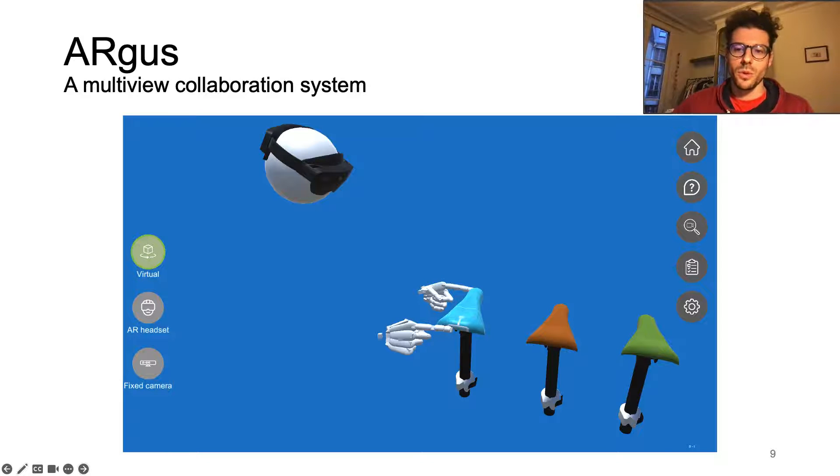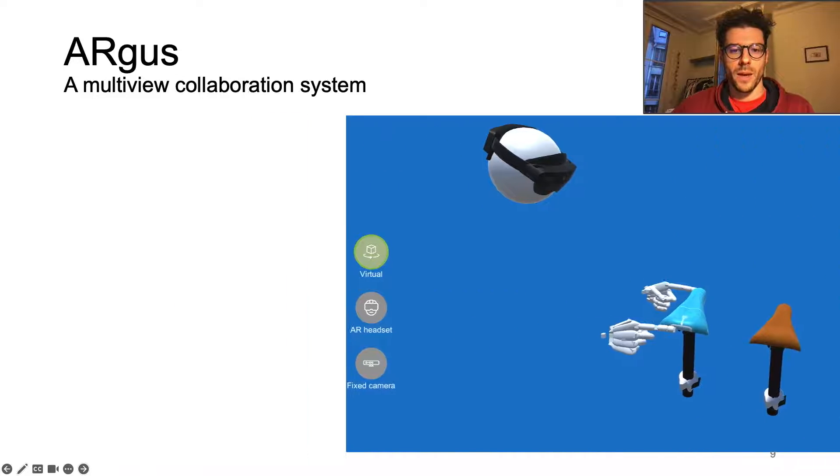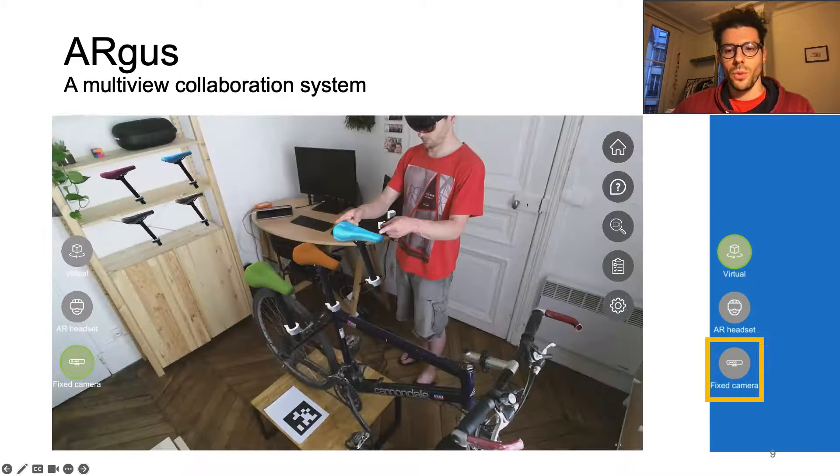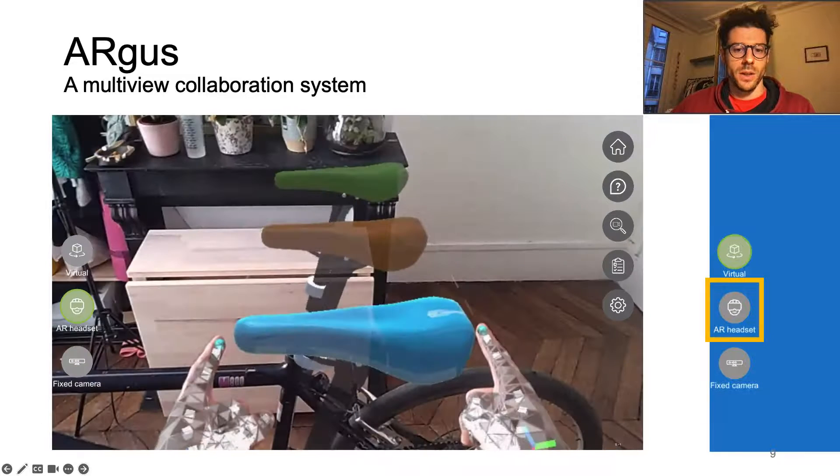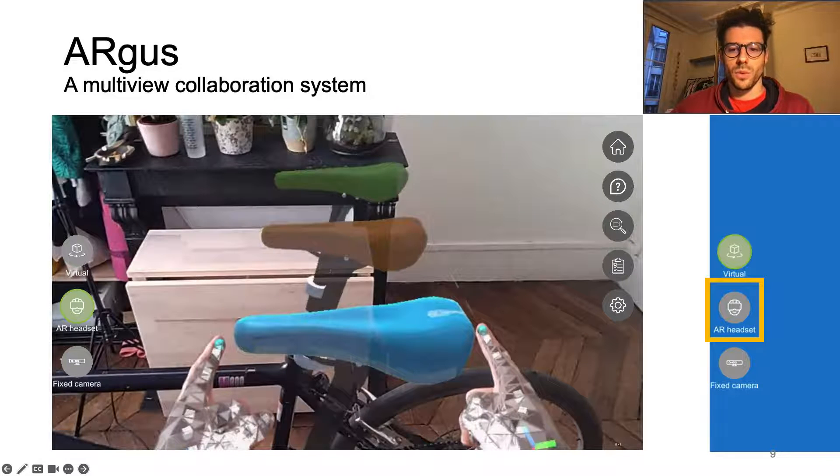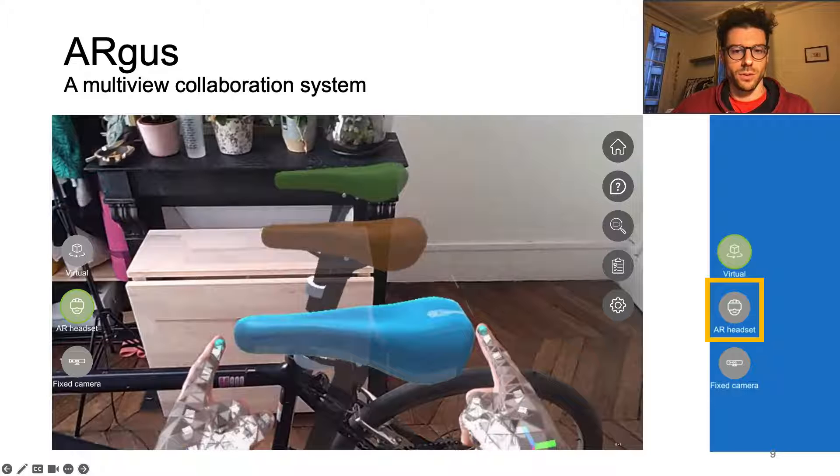With its lateral button, Argus' user interface provides a quick way to switch return view. By clicking on the external view button, the main view will change to the external view. Similarly, by clicking the headset view button, the main view will change to the headset view.